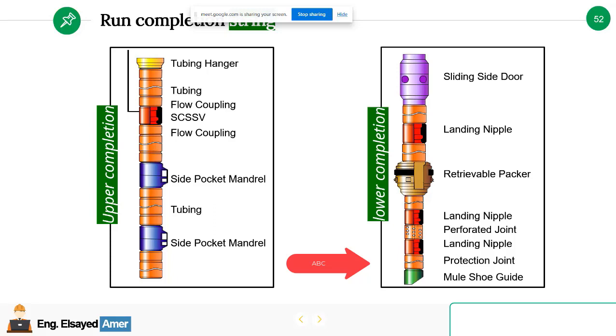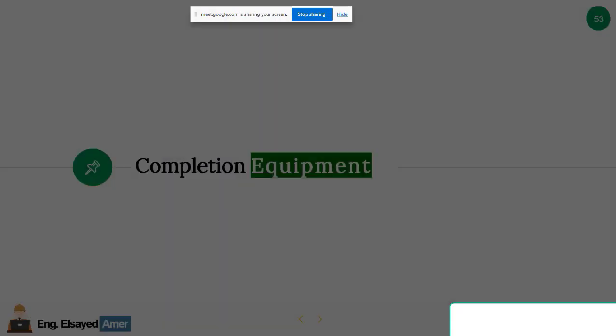A brief revision. We completed the section of well completion. We divided the completion into two parts: upper completion equipment and lower completion equipment.